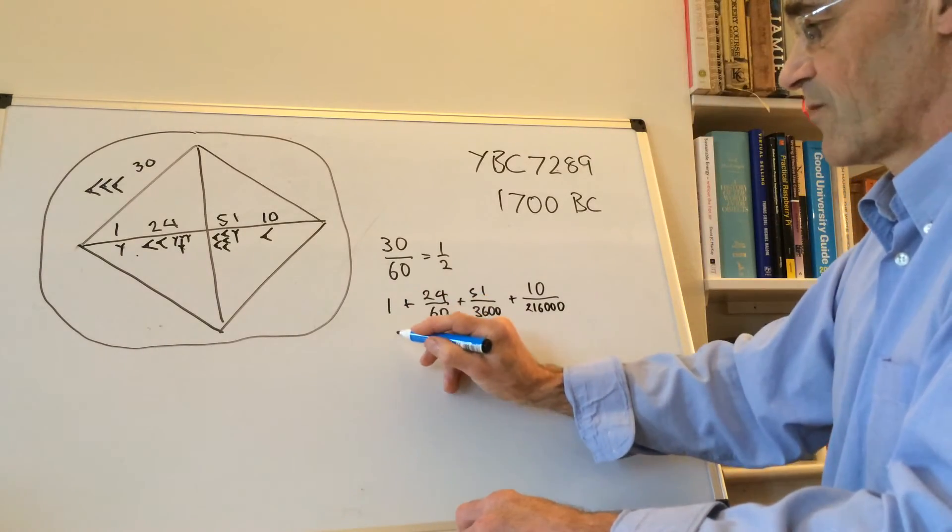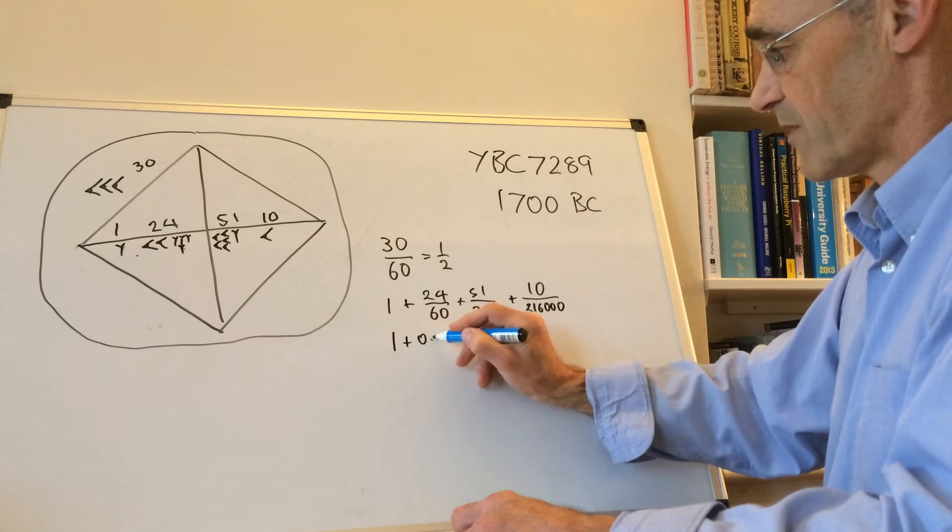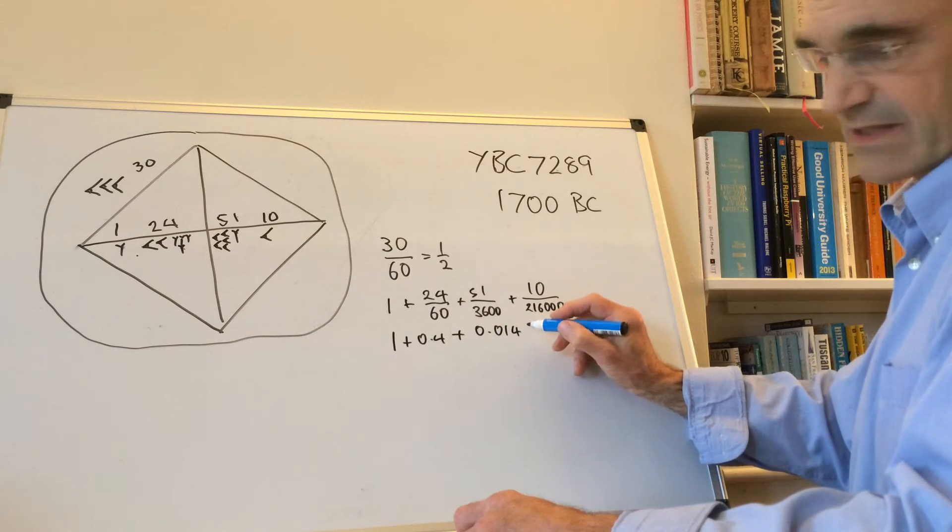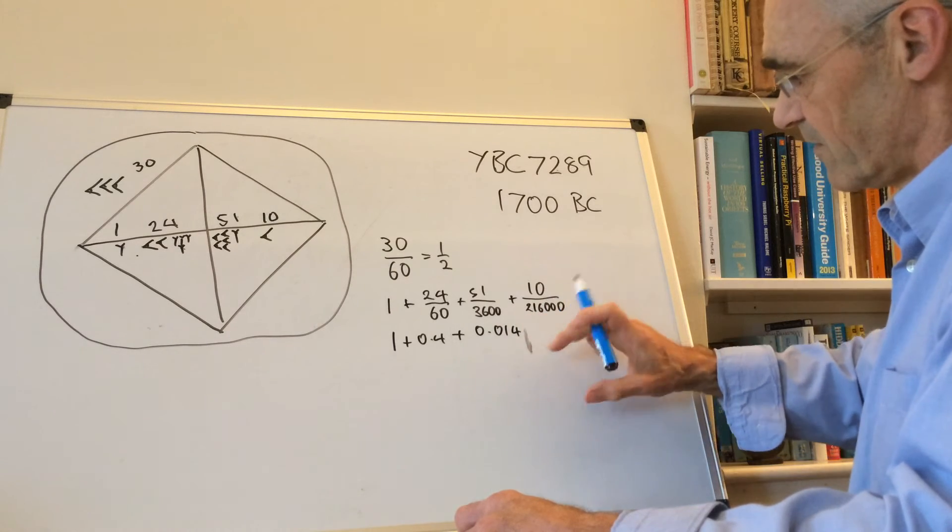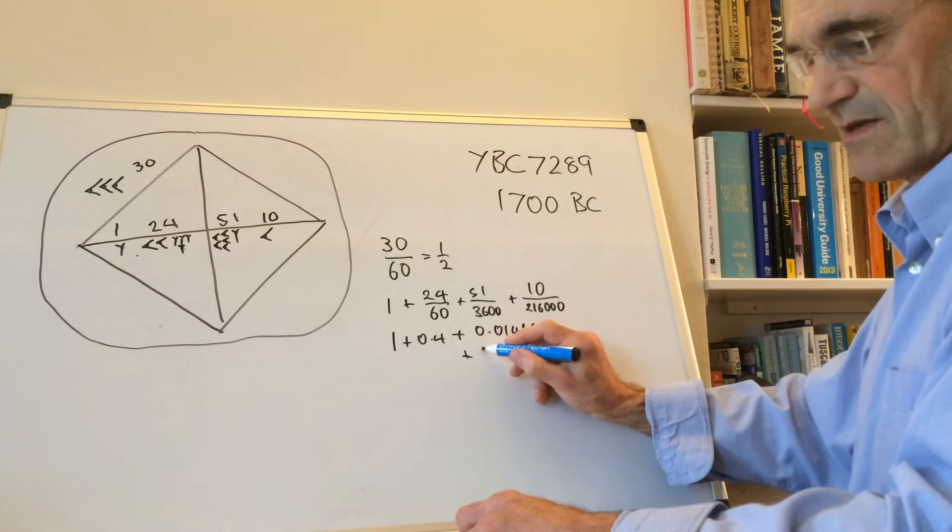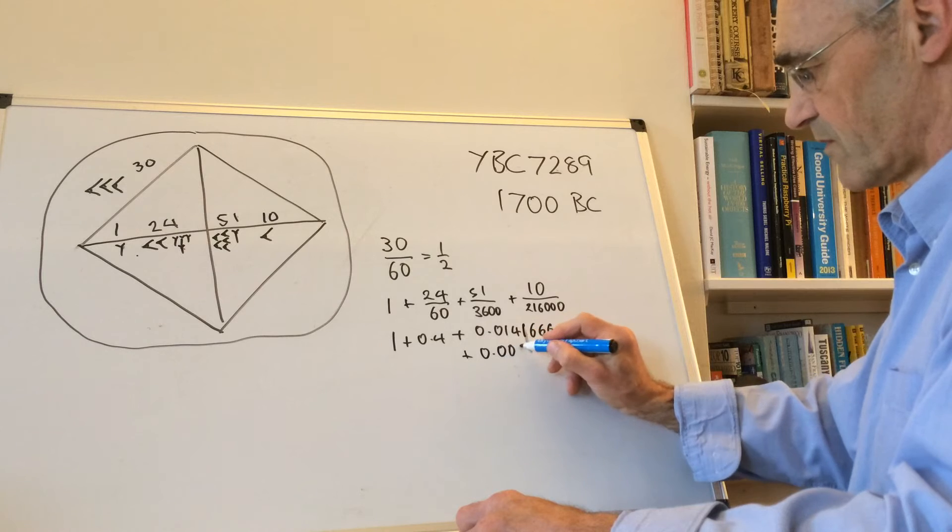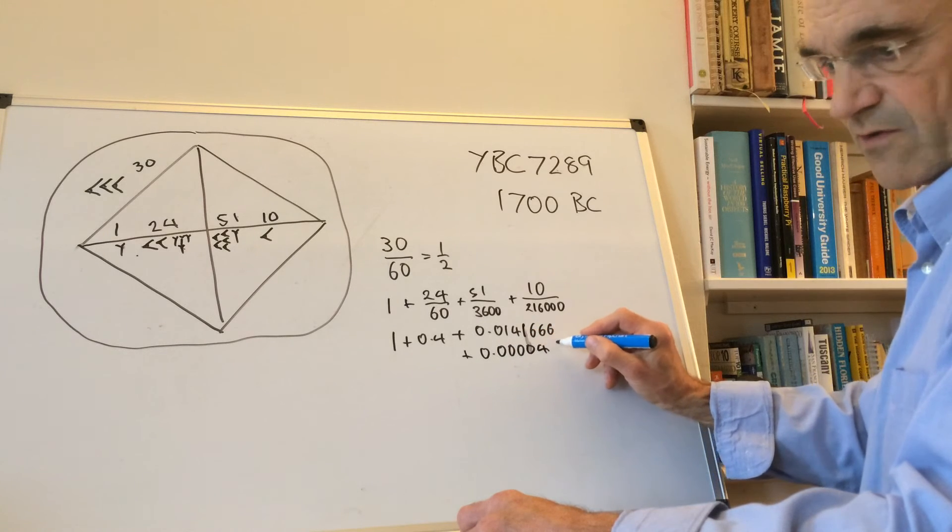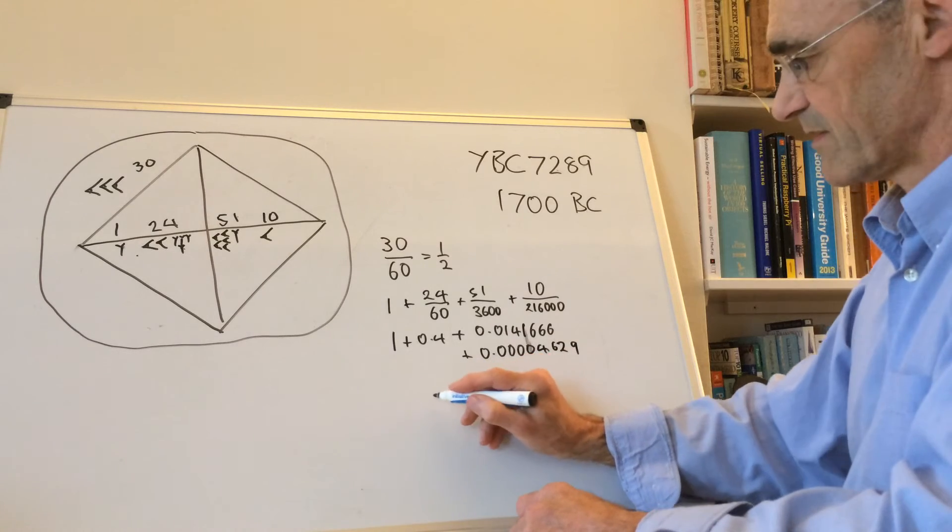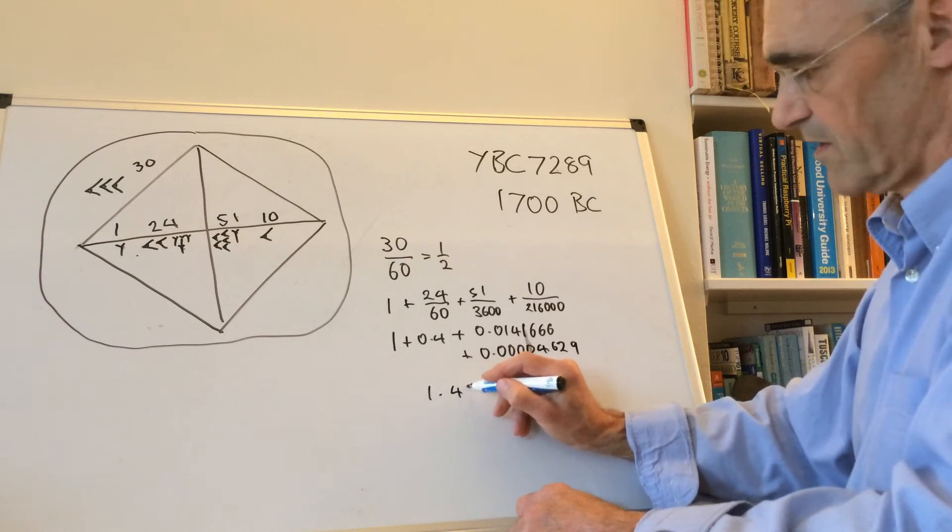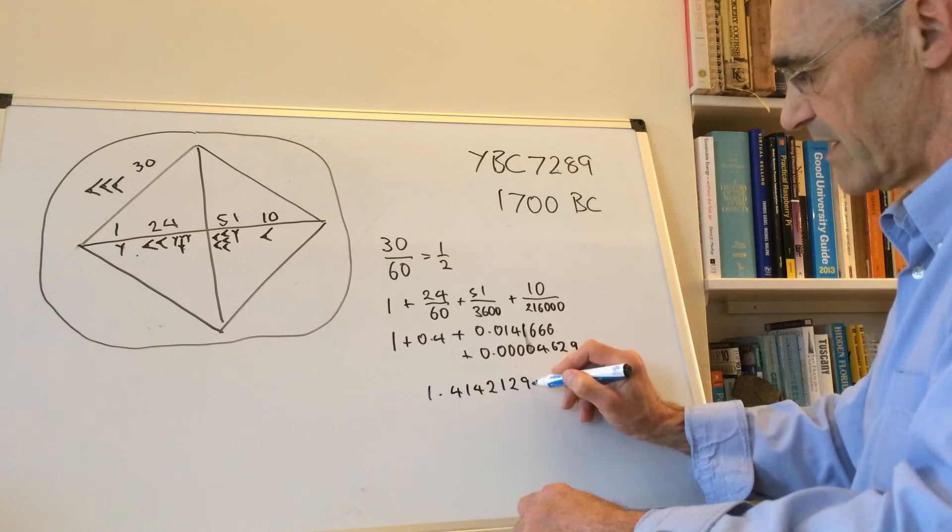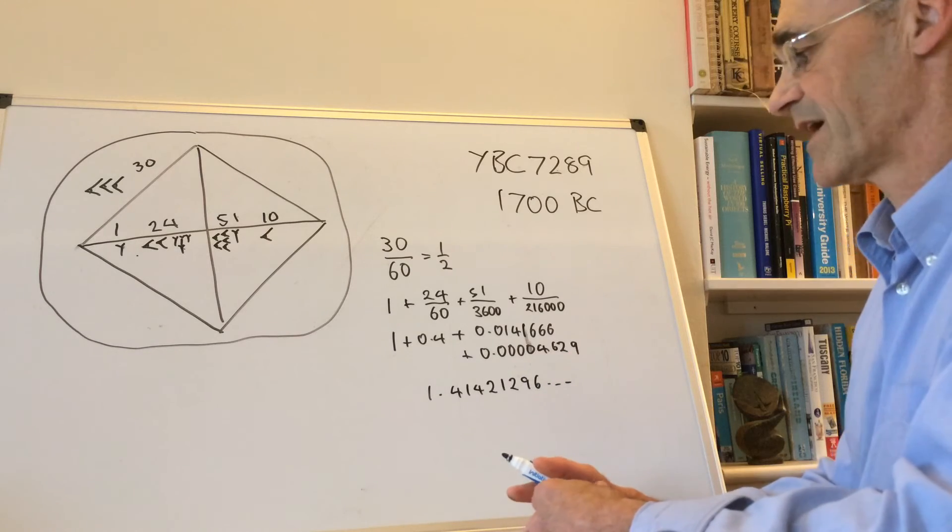So if we work those out, we get a value of 1 plus 0.4 plus 0.01416666, plus 0.000004629, and that adds up to 1.414212963 and some other numbers there.